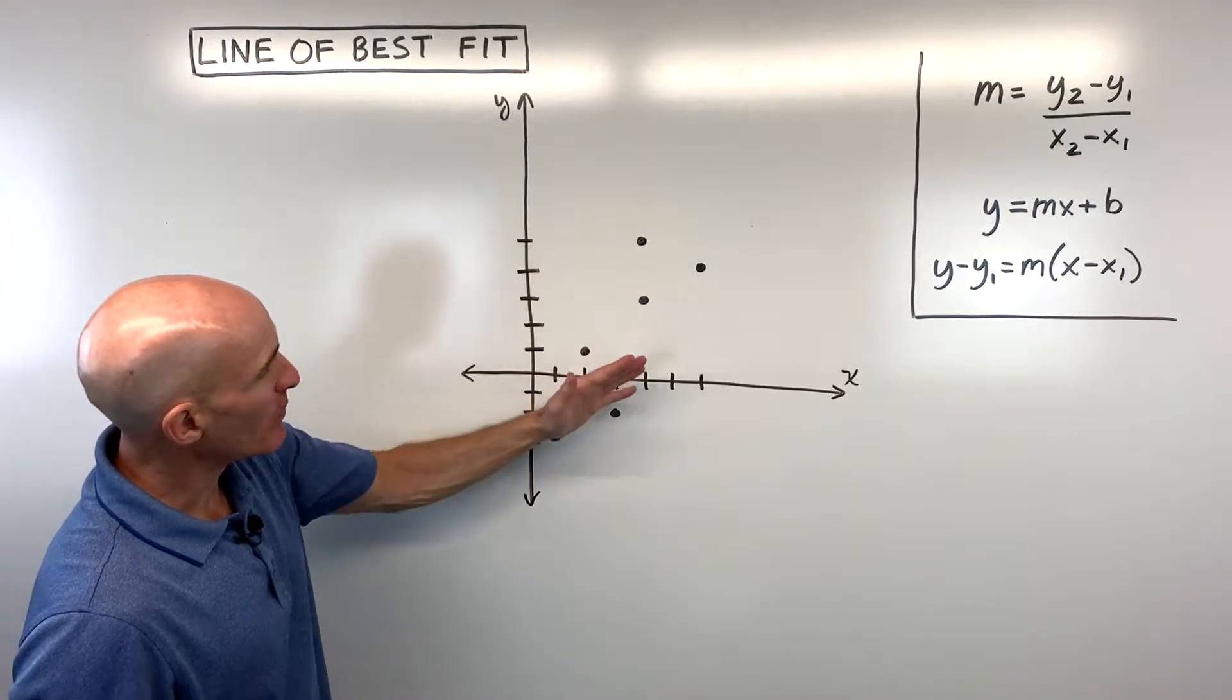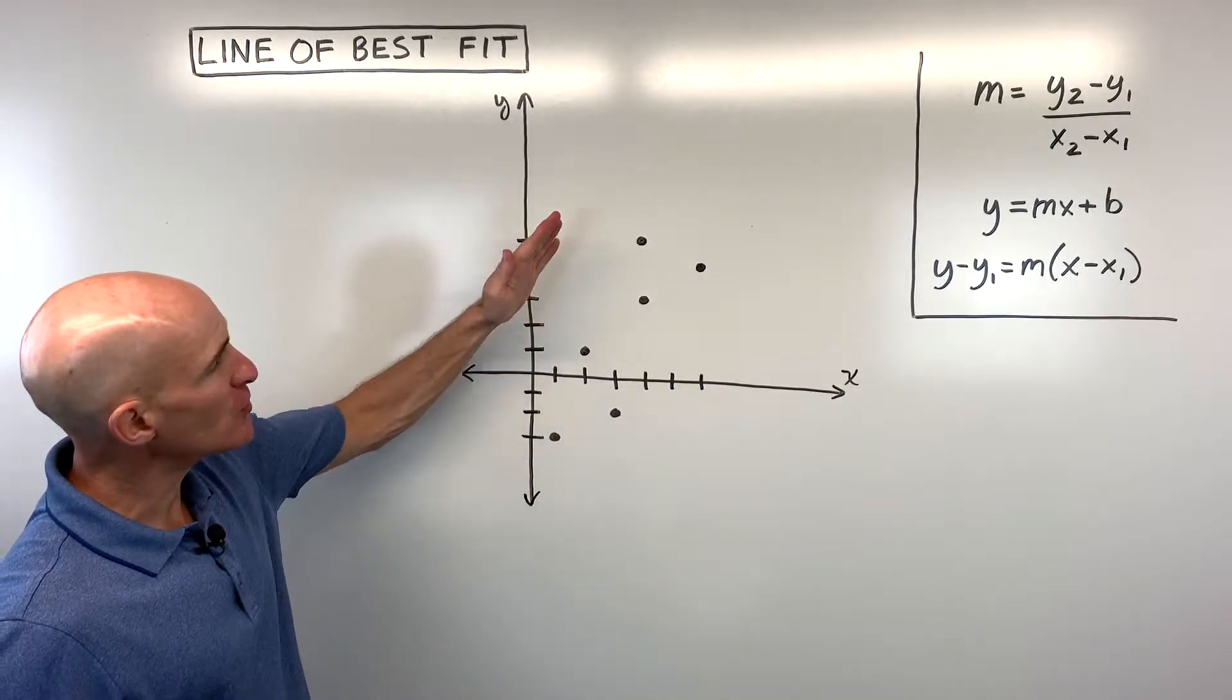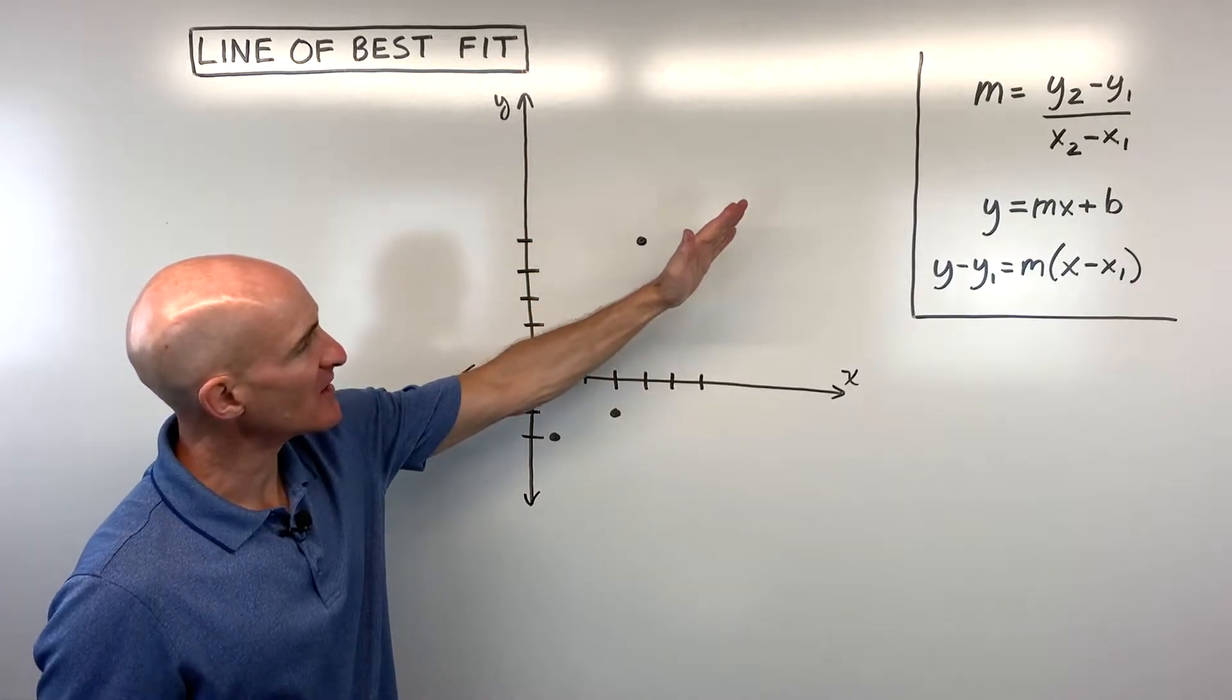But the first thing I would do is I would plot the points that you're given. You may be given a graph like this already. And then what you want to do is you want to estimate where would you put this line of best fit.